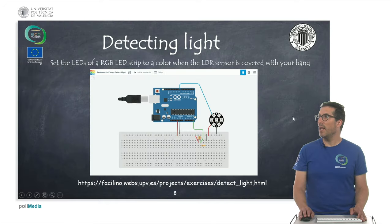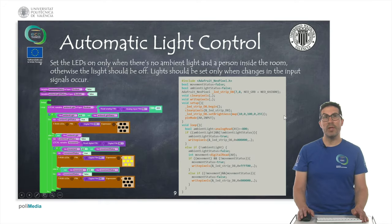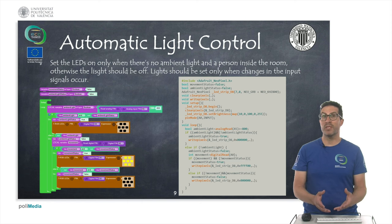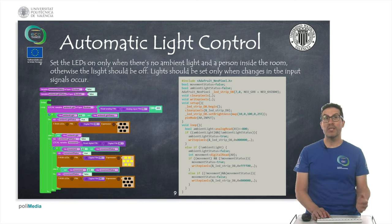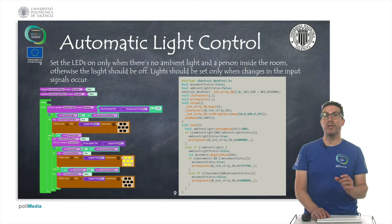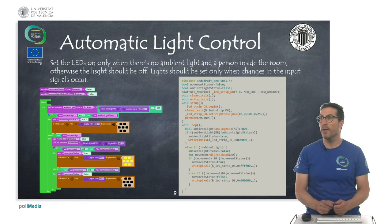And then in the last example, the idea is to implement an automatic light control. So the idea here is that the LEDs should be only on when there's no ambient light and there's a person inside, so there's motion in the room. Otherwise, the lights should be off. And in this case, because we don't want to be setting off and on the LEDs, we want to set only when there are changes on the input. So for that, we use a state machine. This is something we explained before.